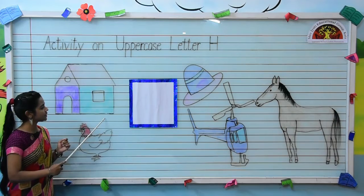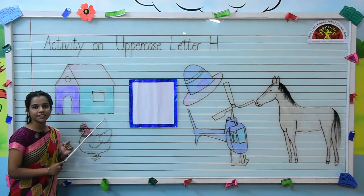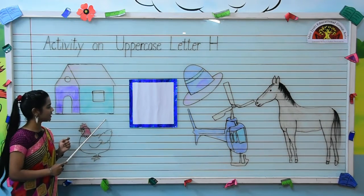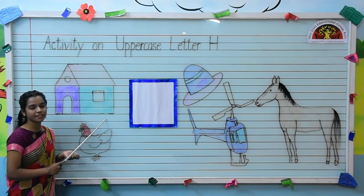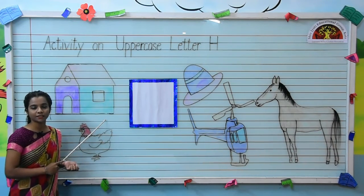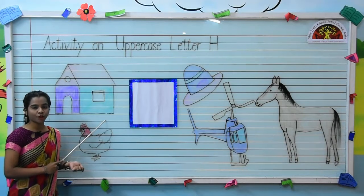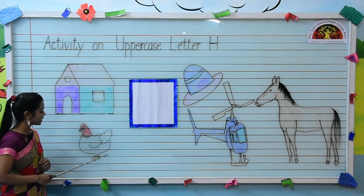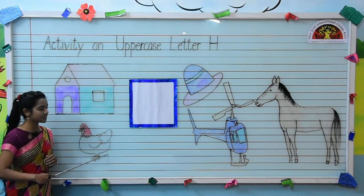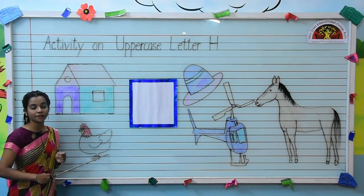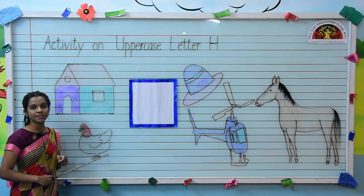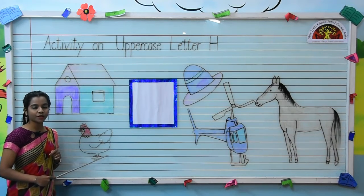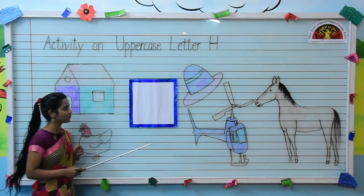So kids, what is this? This is a hut. H for hut. What is this? This is a hen. H for hen.